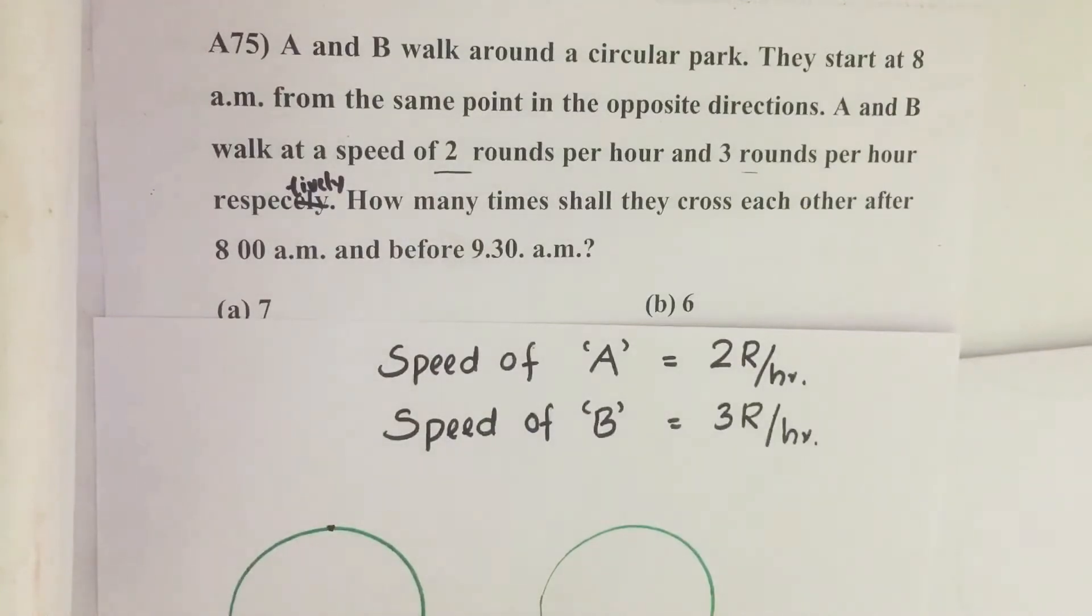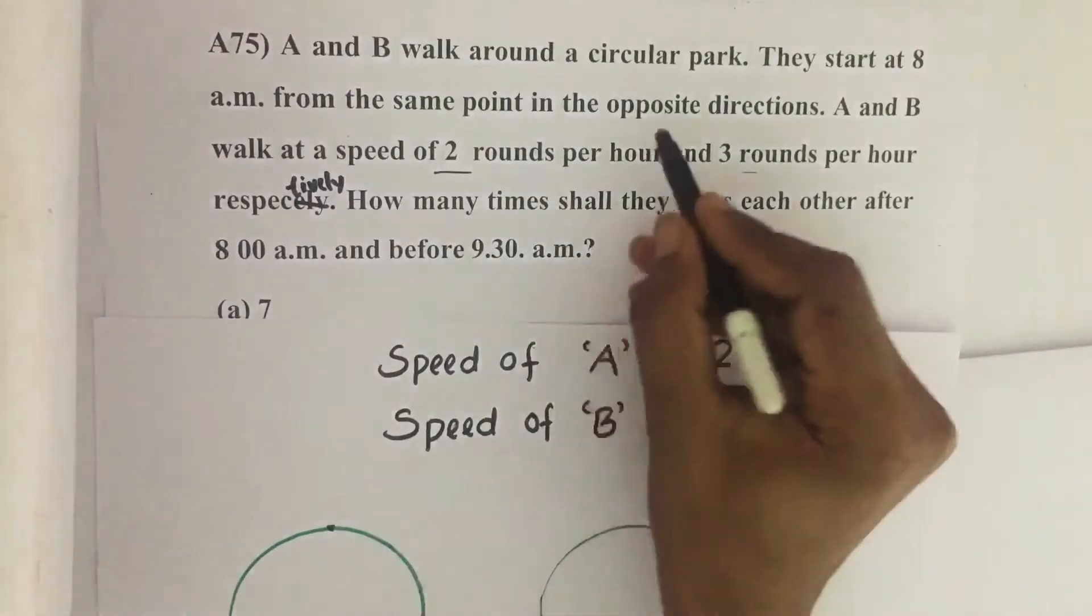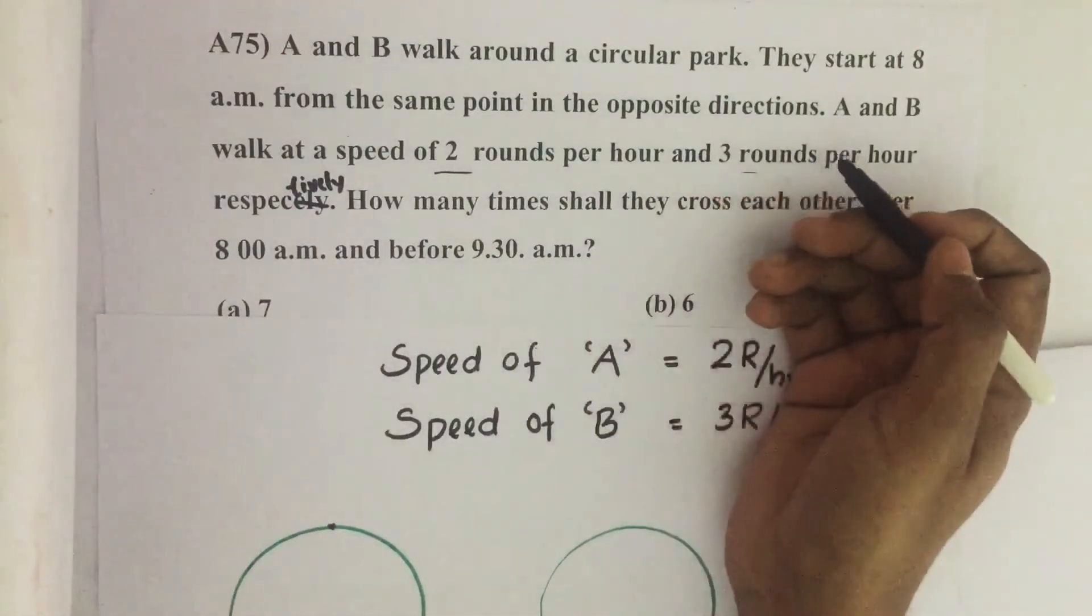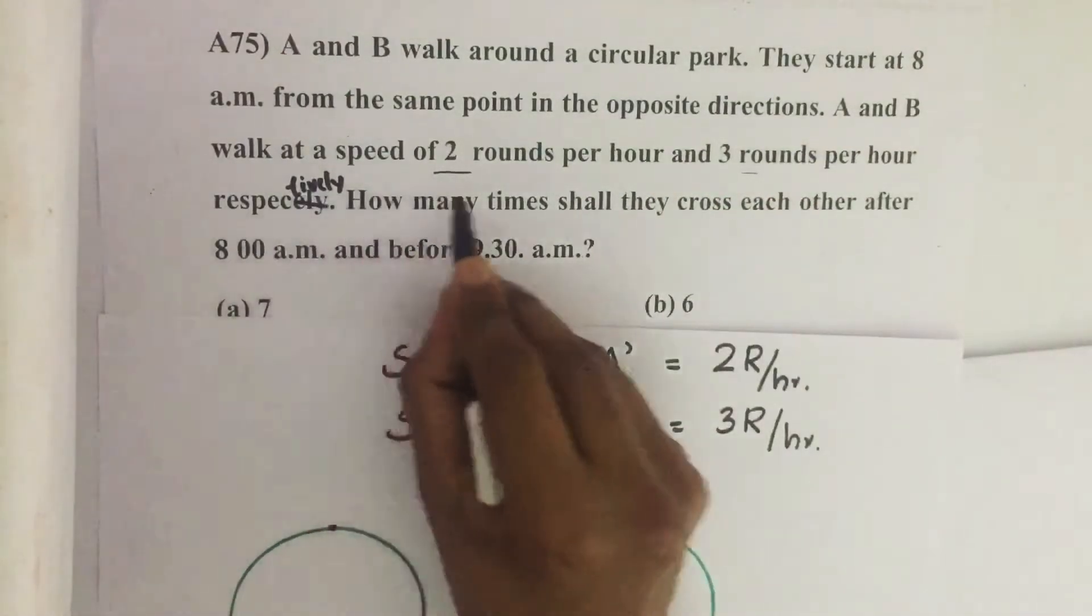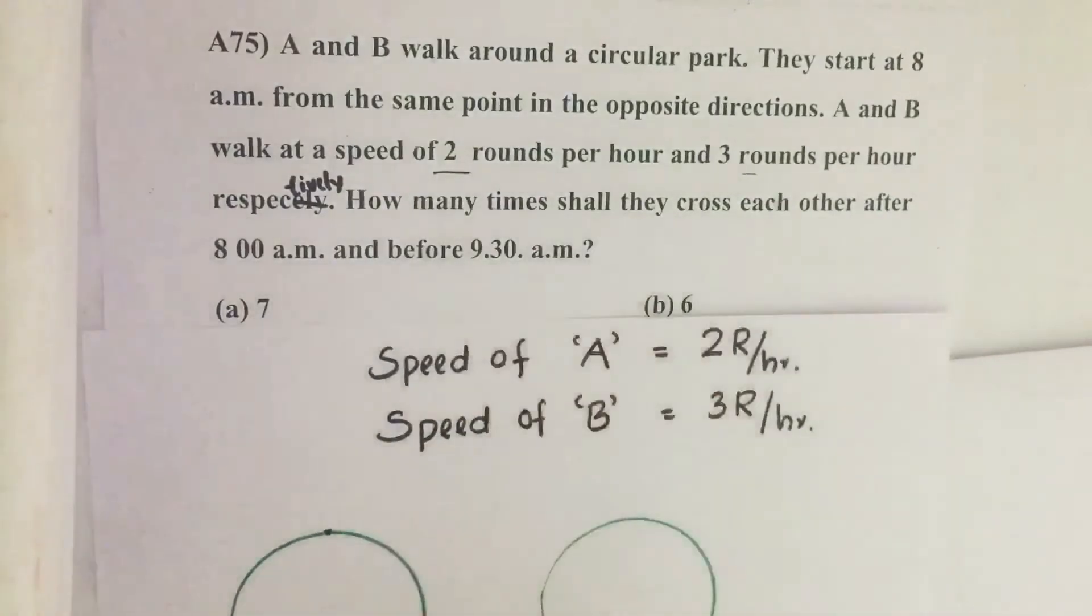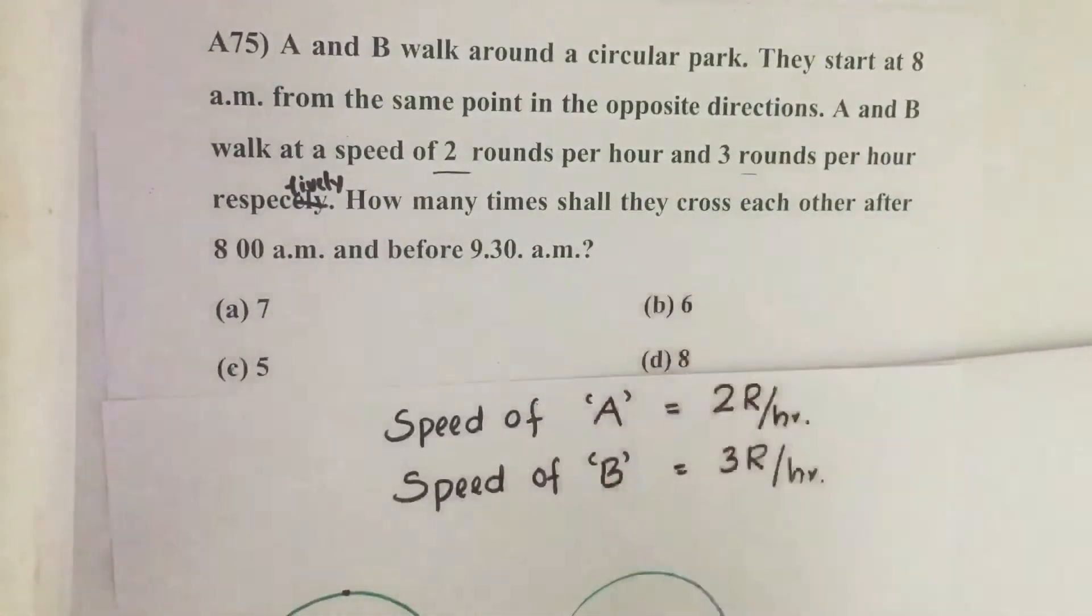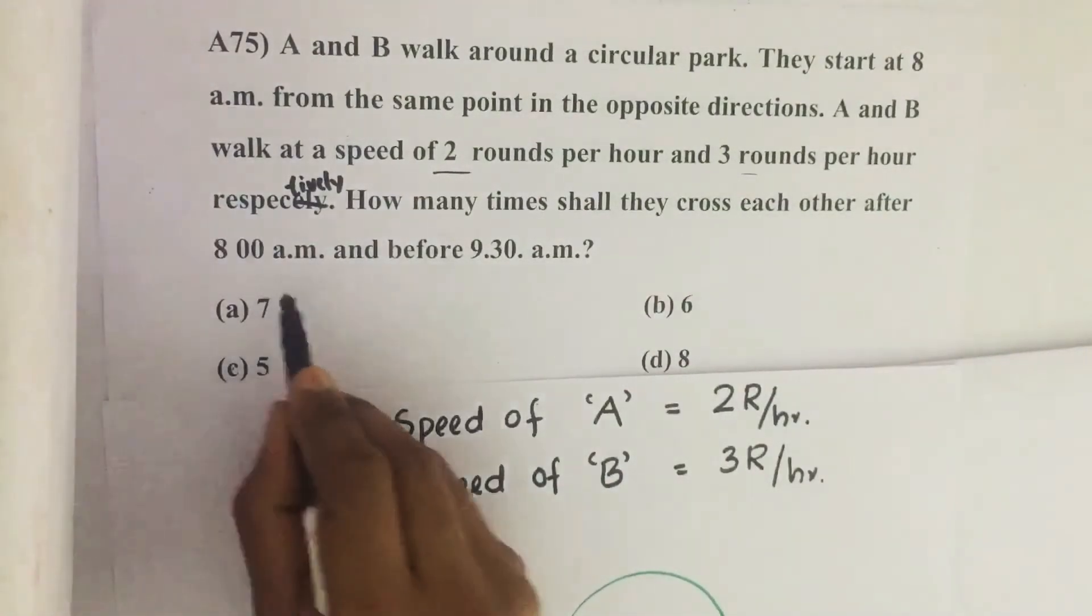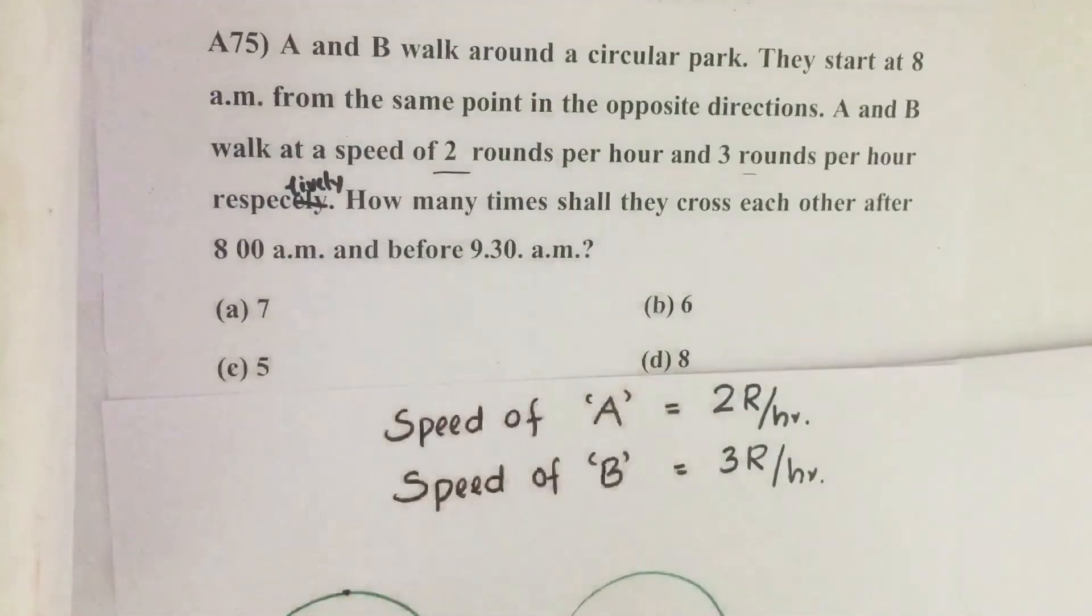A and B walk around a circular park. They start at 8am from the same point in opposite directions. A and B walk at a speed of 2 rounds per hour and 3 rounds per hour respectively. How many times shall they cross each other after 8am and before 9:30am?